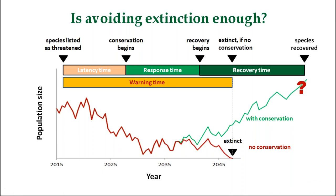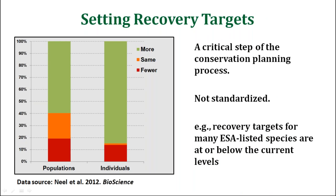But what is recovery? Recovery is not defined in a consistent way, and this creates problems — for instance, in terms of setting recovery targets, which is a critical step of the conservation planning process. However, it's not standardized. This data comes from a paper that analyzed recovery targets of species listed under the United States Endangered Species Act. The paper showed that for many species, the recovery target level is at or below the current number of individuals or populations — about 15% of species have a target below current individuals, and 20% have a target below the current population level.